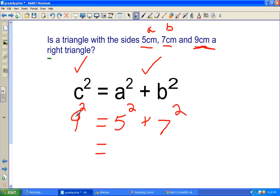So continuing to work it out. 9 times 9 is 81. 5 times 5 is 25, and 7 times 7 is 49.